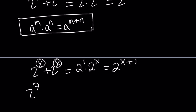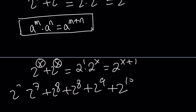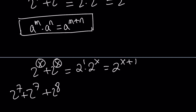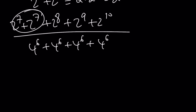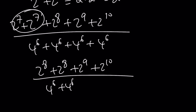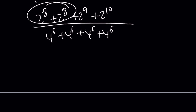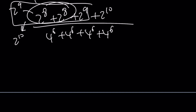Looking at the original expression one more time — let me rewrite it. We have 2 to the 7th twice. Those two combined gave me 2 to the 8th. So now I have 2 to the 8th plus 2 to the 8th plus 2 to the 9th plus 2 to the 10th, divided by the denominator — I'll call that D and deal with it at the end. Combining those first two gives 2 to the 9th; then 2 to the 9th plus 2 to the 9th is 2 to the 10th; and 2 to the 10th plus 2 to the 10th is 2 to the 11th. So the numerator gives us 2 to the 11th.